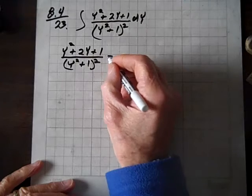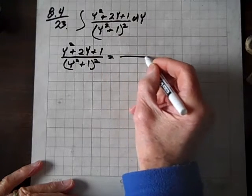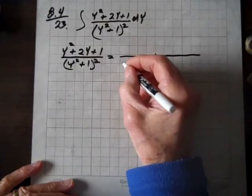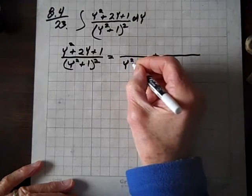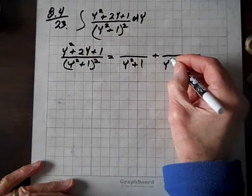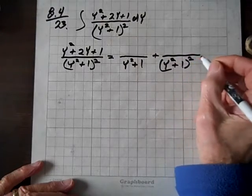So according to partial fractions, we'll write down all possible denominators. And it looks like the options are y squared plus 1, or y squared plus 1 squared. Those are all possibles.